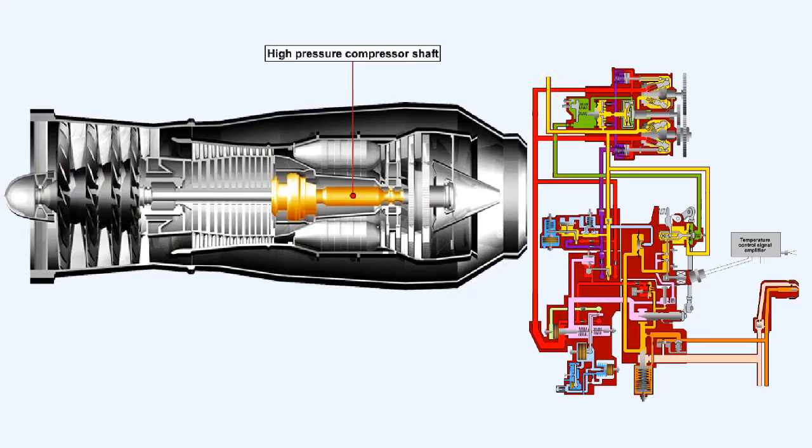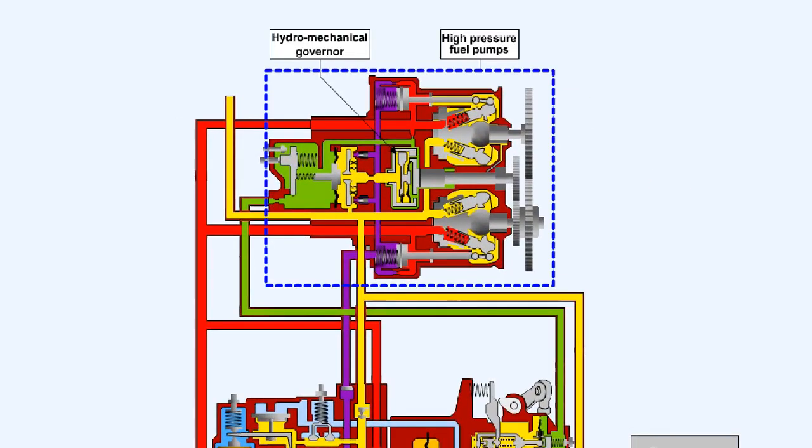The second method of controlling the rotational speed of a compressor is normally used to control the speed of rotation of the high-pressure compressor shaft. This high-pressure compressor shaft drives the accessory gearbox, which in turn drives, among other things, the high-pressure fuel pumps. Fitted within the high-pressure fuel pump is a hydromechanical governor.